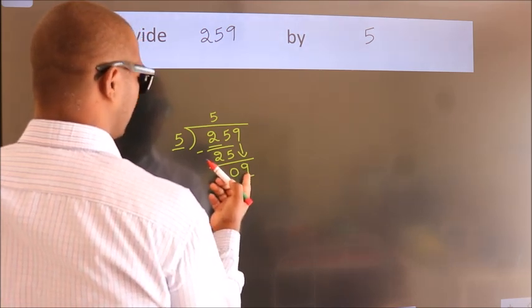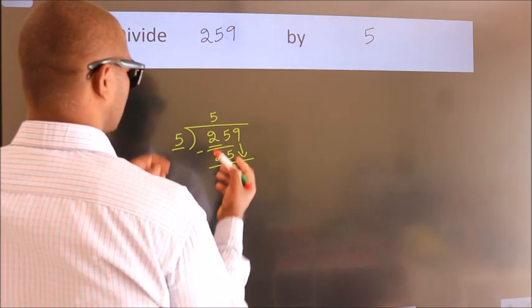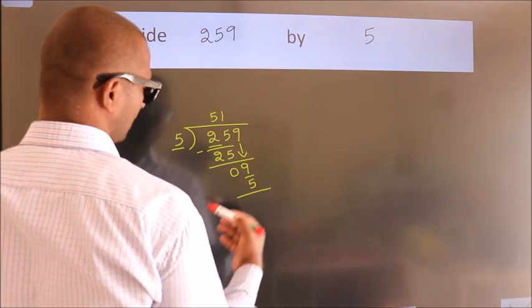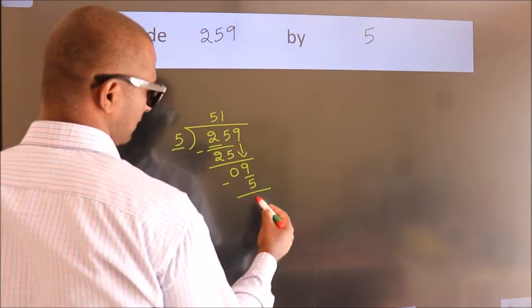A number close to 9 in the 5 table is 5 times 1, which is 5. Now we subtract and get 4.